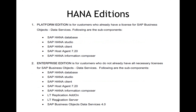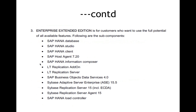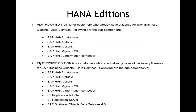There are three major editions of SAP HANA. The first is the Platform Edition, which is only for very limited, existing SAP customers who run SAP services and have licenses for Data Services and SLP. For these customers, the core components provided are the SAP HANA database, HANA Studio, HANA client, the Host Agent, and the HANA Information Composite. No other components are included — this is only for existing SAP customers.